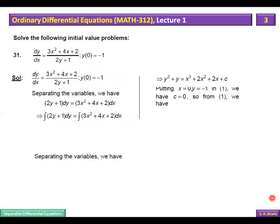And when you put x = 0, y = −1, the value of c comes out to be 0. So the solution becomes y³ + y = x³ + 2x² + 2x. This is the complete solution. Here you found the particular value of c depending on the initial condition x = 0, y = −1.